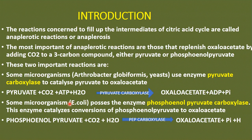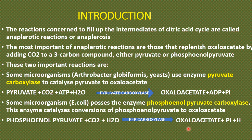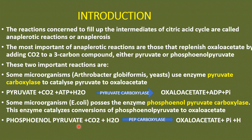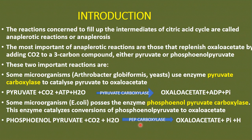Some other microorganisms like E. coli also possess another enzyme called phosphoenolpyruvate carboxylase, or PEP carboxylase. This enzyme catalyzes the conversion of phosphoenolpyruvate to oxaloacetate without the involvement of ATP — unlike pyruvate carboxylase, which requires ATP. Here, phosphoenolpyruvate itself acts as an energy-rich compound. In addition to bacteria such as E. coli and Salmonella typhimurium, PEP carboxylase is also found in plants.